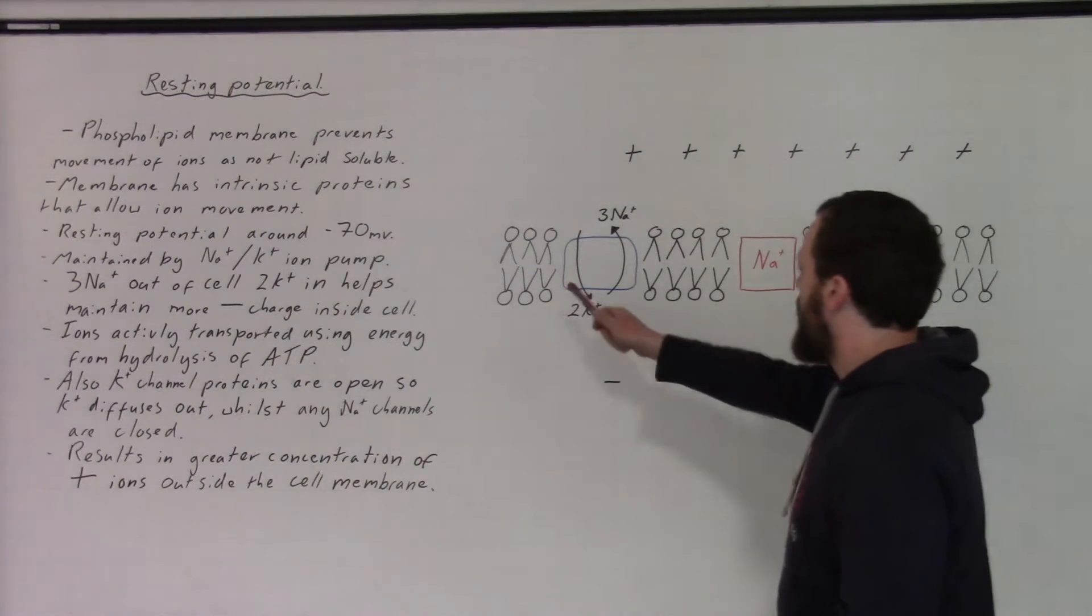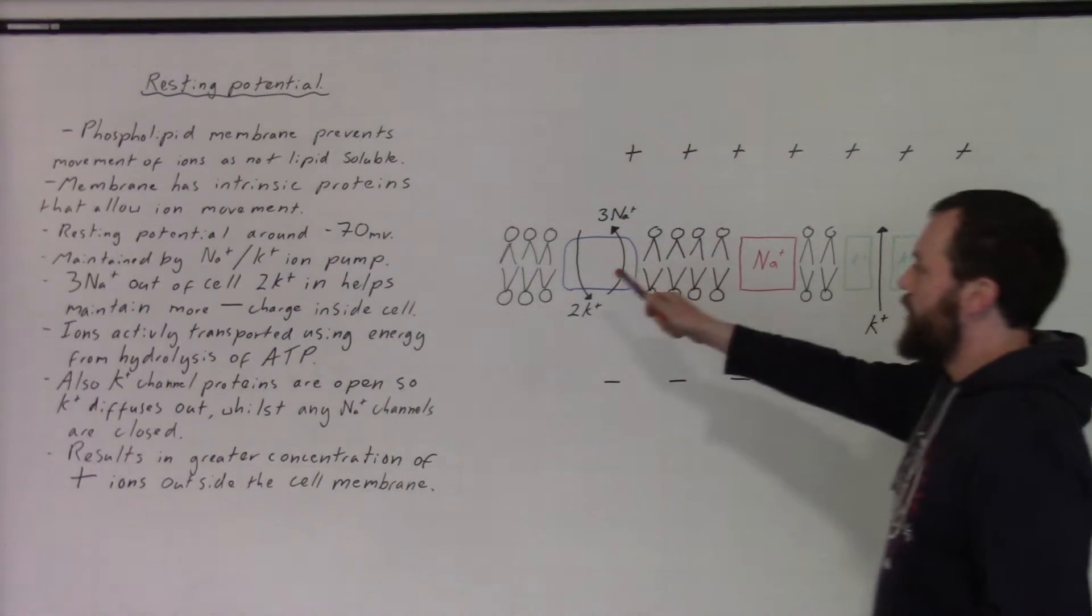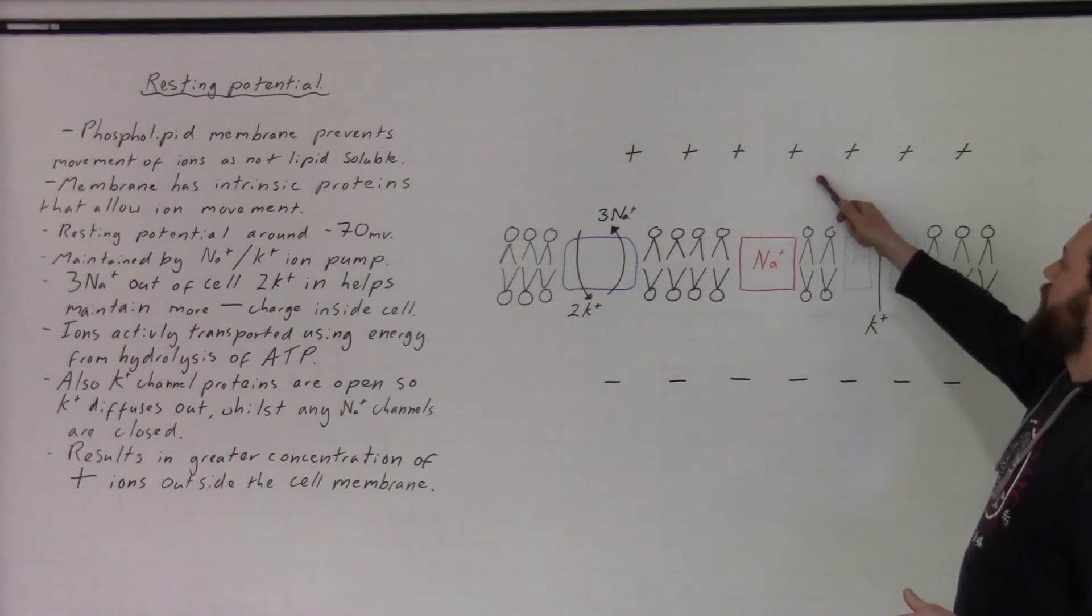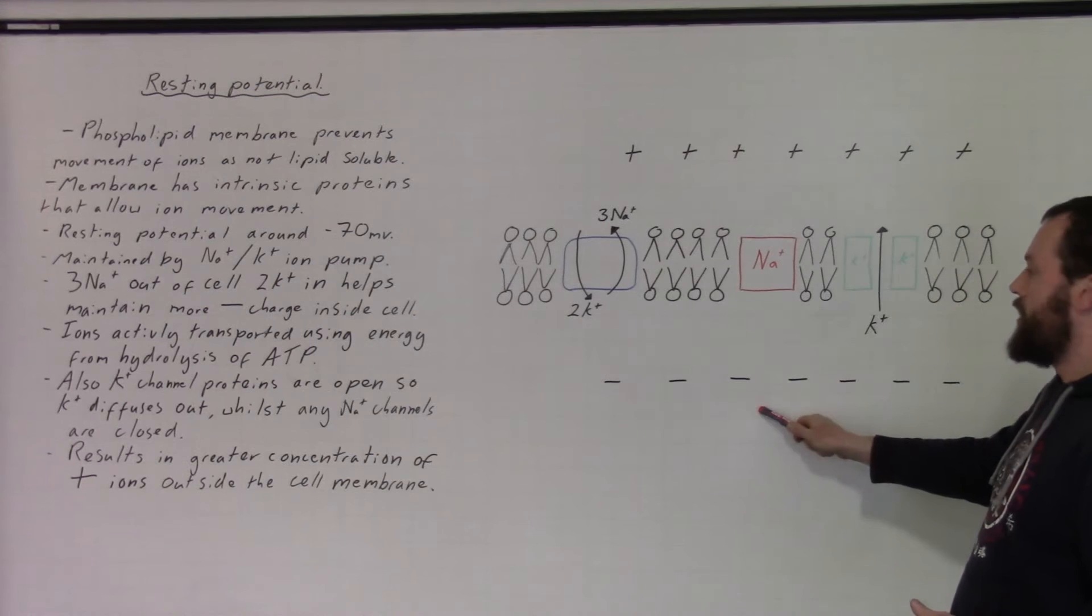Essentially what's happening here, we have the membrane of a neuron. We see that the membrane of the neuron is positive on the outside and negative on the inside.